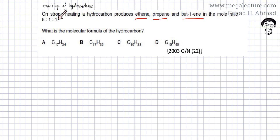The mole ratio is 5 to 1 to 1, which means that if it cracks, 5 ethene molecules are produced, 1 propane molecule is produced and 1 but-1-ene molecule is produced. So I'm going to try and write an equation.